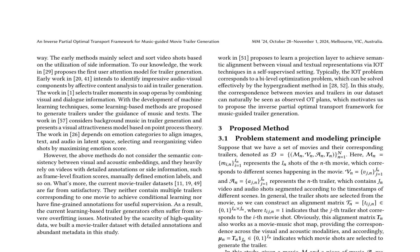This research paper proposes an inverse partial optimal transport framework for music-guided movie trailer generation. The authors argue that existing methods rely heavily on detailed annotations or side information, which are often unavailable or unsatisfactory. They address this limitation by building a movie trailer dataset with detailed annotations and abundant metadata. The paper reviews the concept of optimal transport, OT, and its applications in machine learning tasks such as distribution comparison and matching.